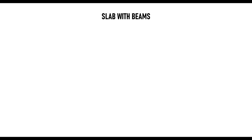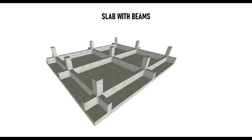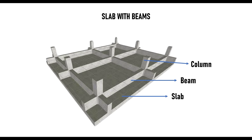The second type is the slab with beams, similar to the first but with the addition of beams. The beams are not primarily load-carrying; rather, they act as stiffeners to reduce the effective depth of the slab. As a result, the slab depth is much smaller. There are two construction methods generally used to execute a beam-slab raft foundation.